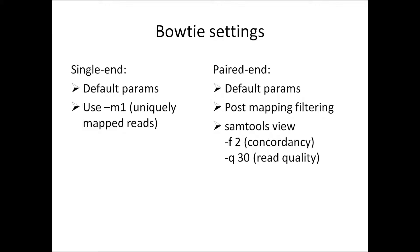Therefore, I run Bowtie2 using default parameters. But then, after mapping, I check the reads to see whether they are concordant — that is, the reads are in a forward and reverse orientation, no more than 500 bases apart. Additionally, instead of worrying whether the reads are uniquely mapped, I look to see whether the reads are of good mapping quality. Both concordancy and mapping quality can be checked using the SAMTools program view. The flags are shown here: "-F2" and "-Q30". At the end of paired-end mapping, I am reasonably confident that the reads are good quality and concordant.